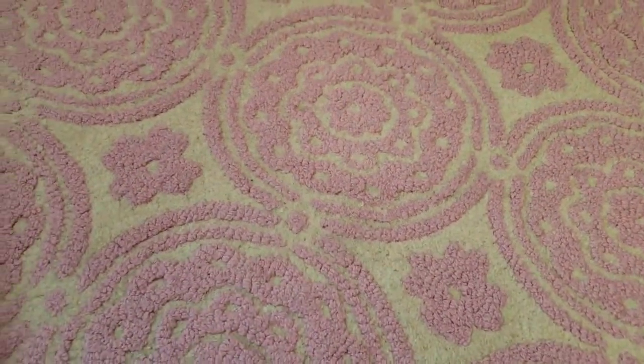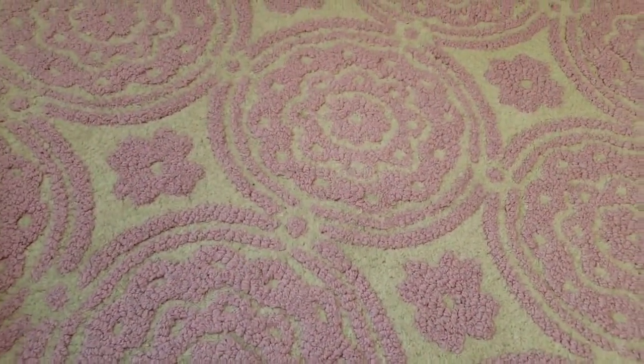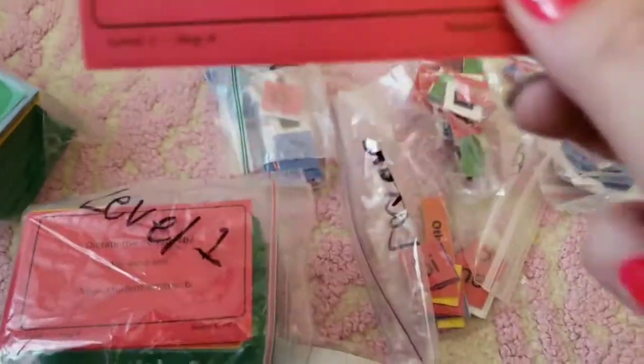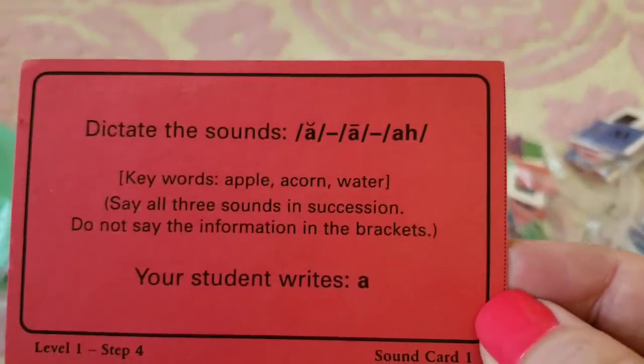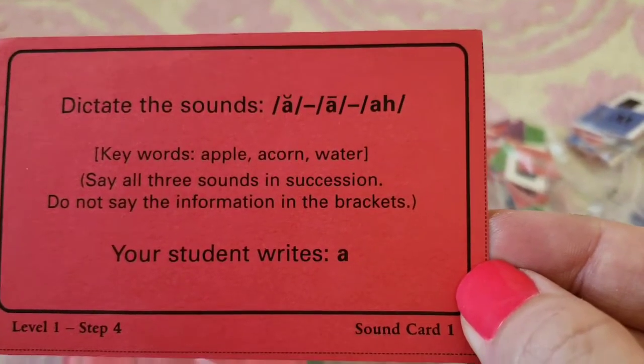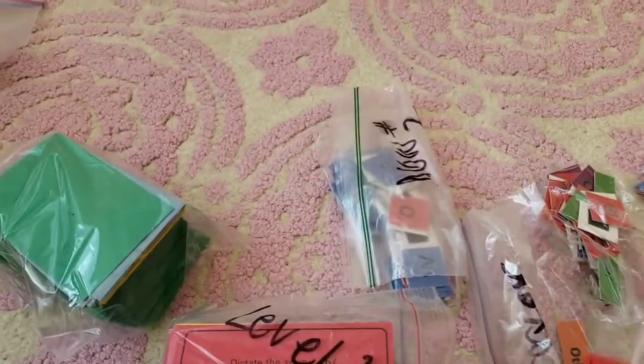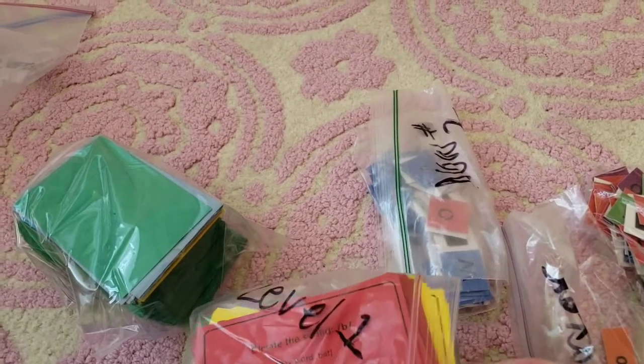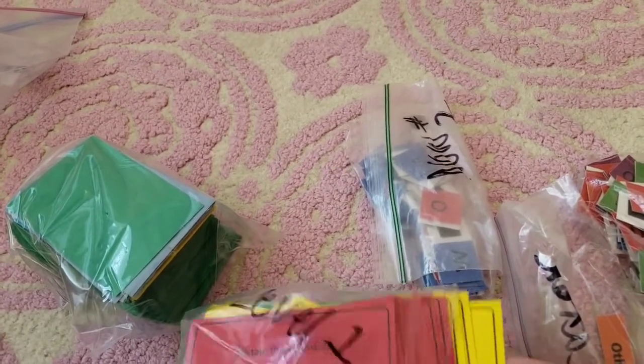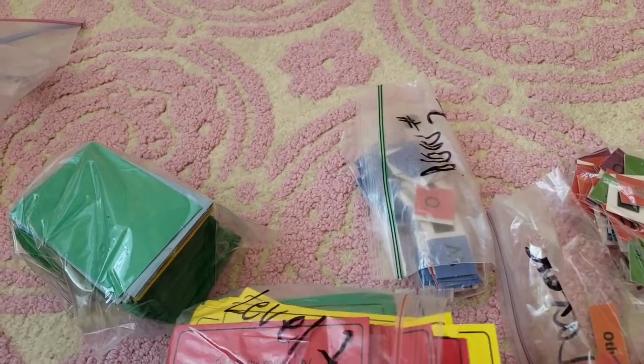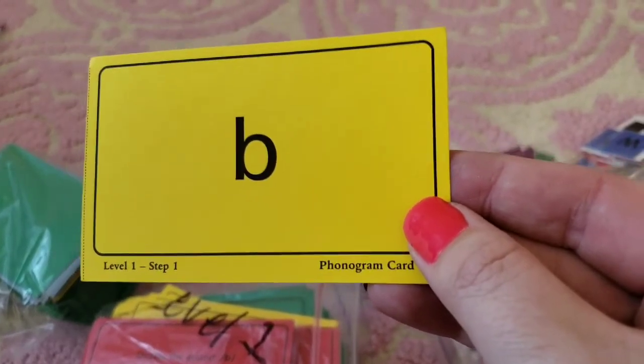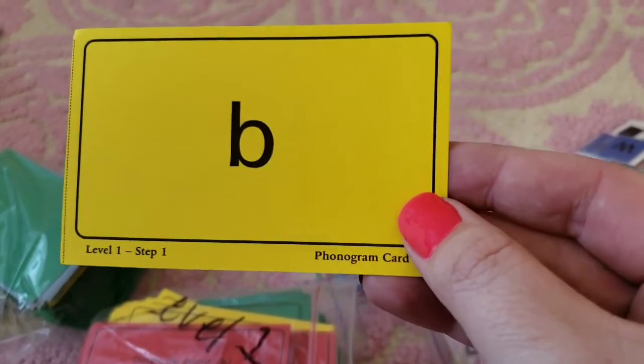So next I'm going to show you the actual hands-on stuff that comes with it. Here's an example of what a sound card looks like. There's nothing on the back. And here's an example of a phonogram card. And these are for level one. So this is just level one starts out literally at the sounds of each letter.